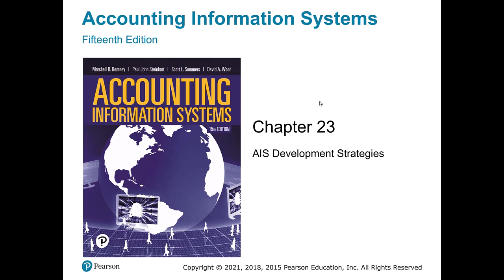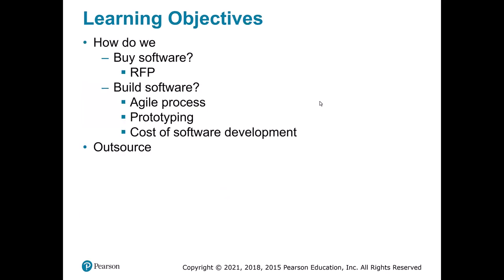This chapter is going to follow up on our initial one to try and get more into specific strategies we're going to use to develop an accounting information system. It builds on the prior chapter by being a little bit more concrete. We're going to break it into three general camps: buy, build, and outsource.